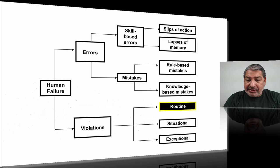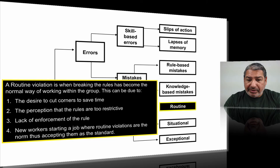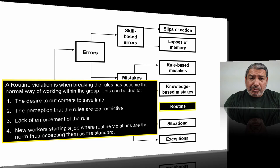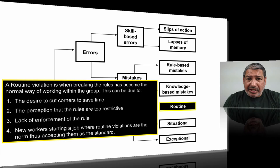The first is a routine violation — when breaking the rules has become the normal way of working within the group. This can be due to a desire to cut corners to save time, the perception that the rules are too restrictive, lack of enforcement, or new workers joining where routine violations are already the norm. I experienced this myself: I spent 12 years in the armed forces, then joined the prison service. I did the training, thoroughly enjoyed it, went to my first prison, and they said: 'Forget all that — this is how we do it here.' They were predisposing me to a routine violation environment.